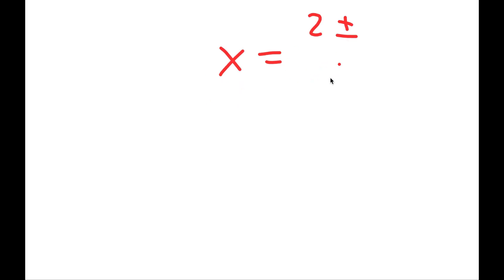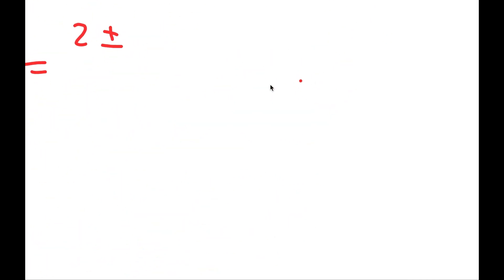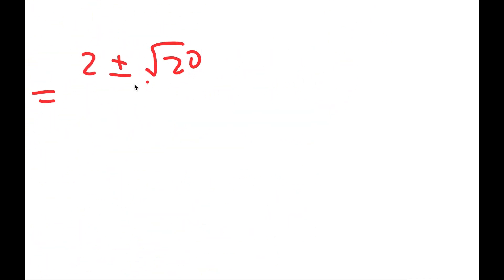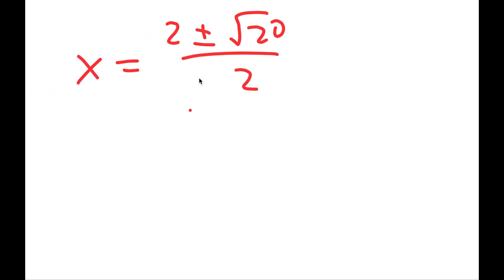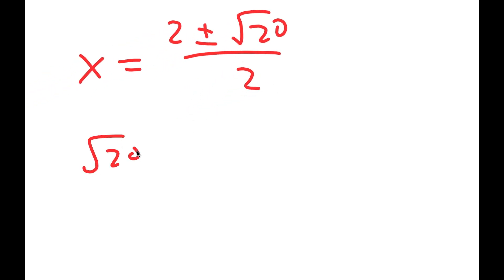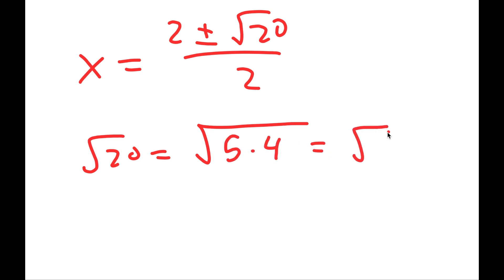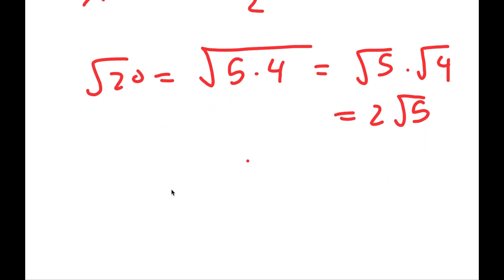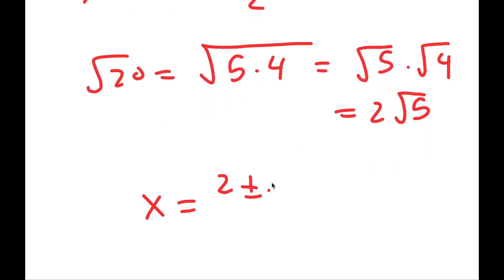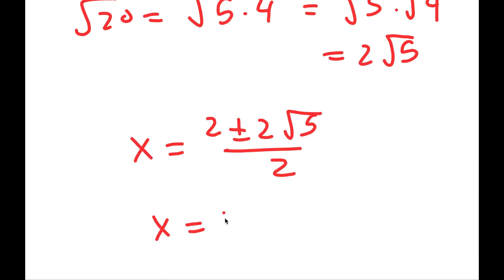So I'm going to rewrite that: x is equal to 2 plus or minus the square root of 20, over 2. Now the square root of 20 is the same thing as the square root of 5 times 4, which is equal to the square root of 5 times the square root of 4, which is equal to 2 root 5. So I get x is equal to 2 plus or minus 2 root 5 over 2, meaning x is equal to 1 plus or minus the square root of 5.